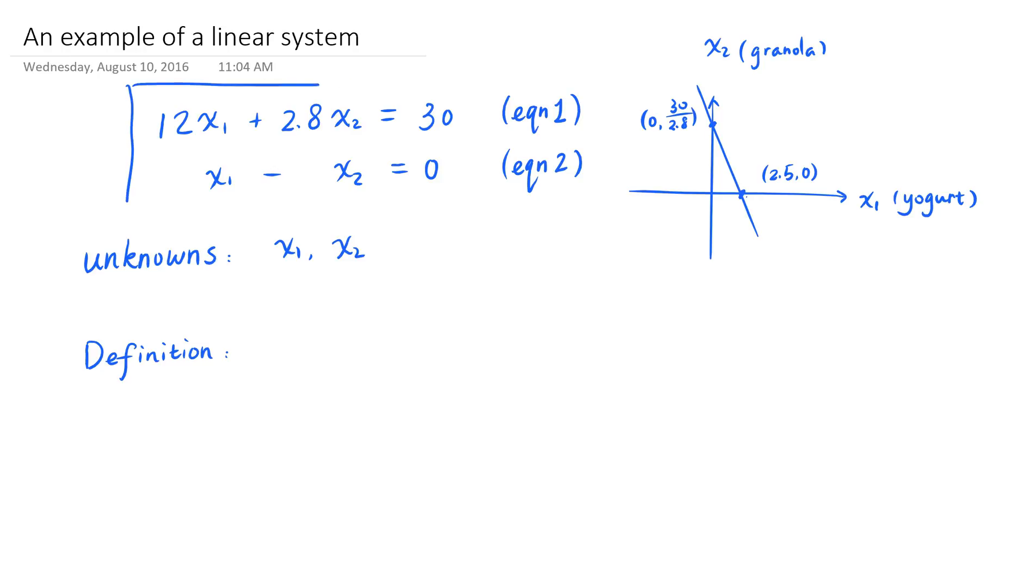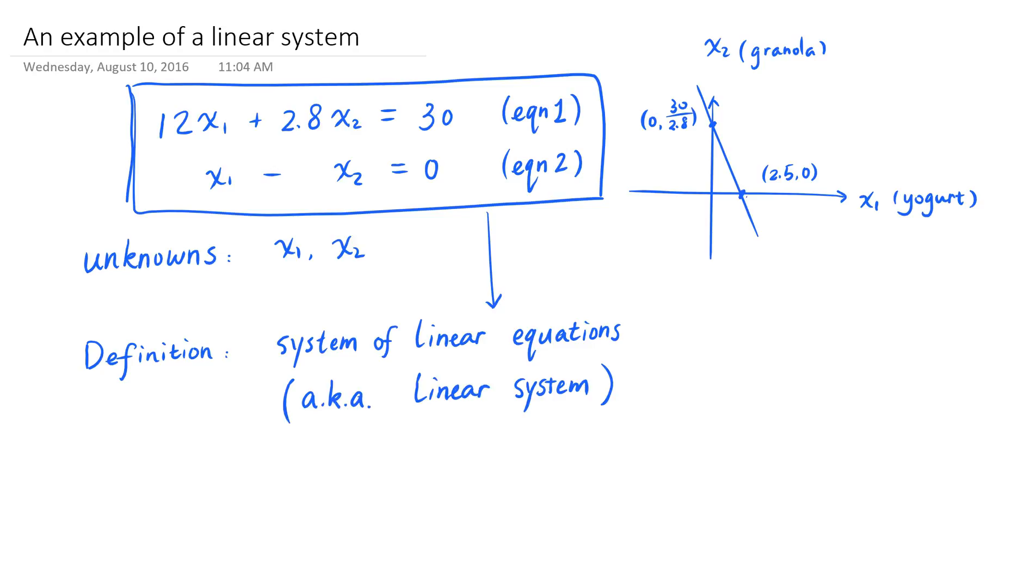So when you have a set of linear equations about the same set of unknowns, then the set of linear equations is called a system of linear equations. Or more briefly, a linear system.